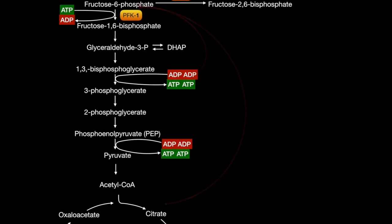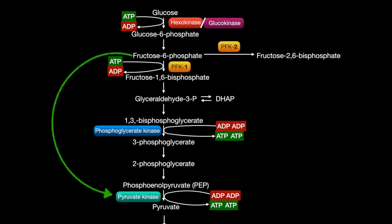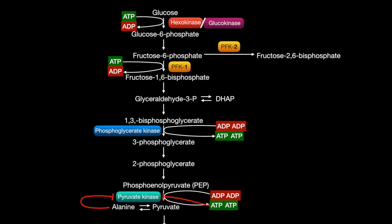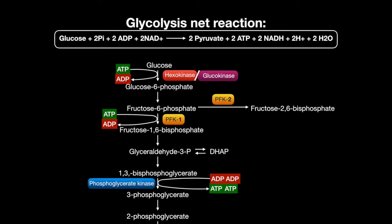The enzymes that produce ATP in glycolysis are phosphoglycerate kinase and pyruvate kinase. Pyruvate kinase is activated by fructose-6-phosphate and inhibited by ATP and alanine. Together, these enzymes produce this net reaction.